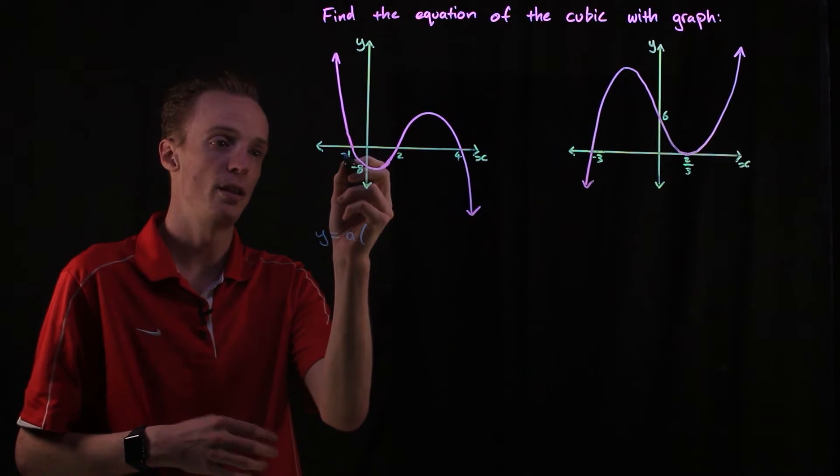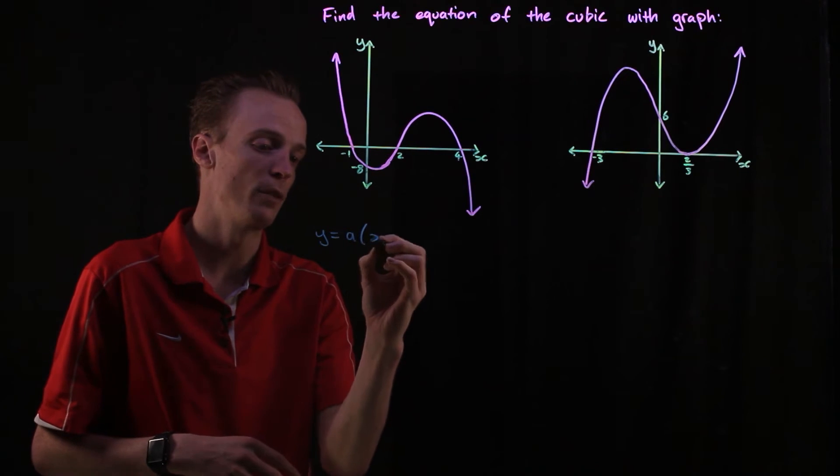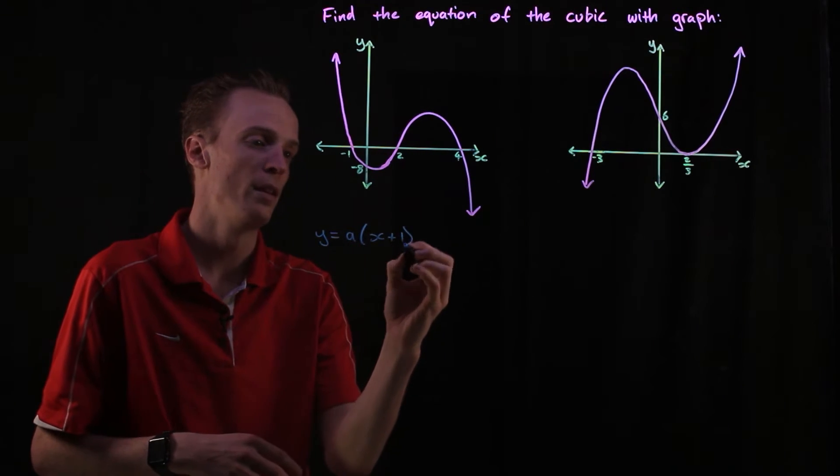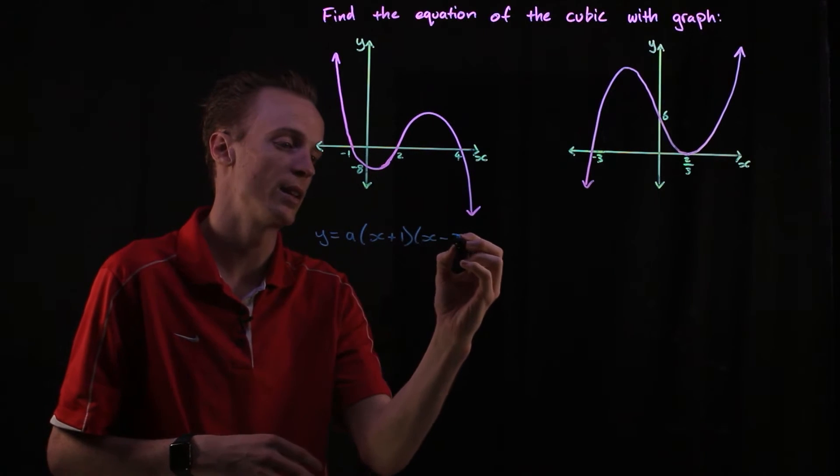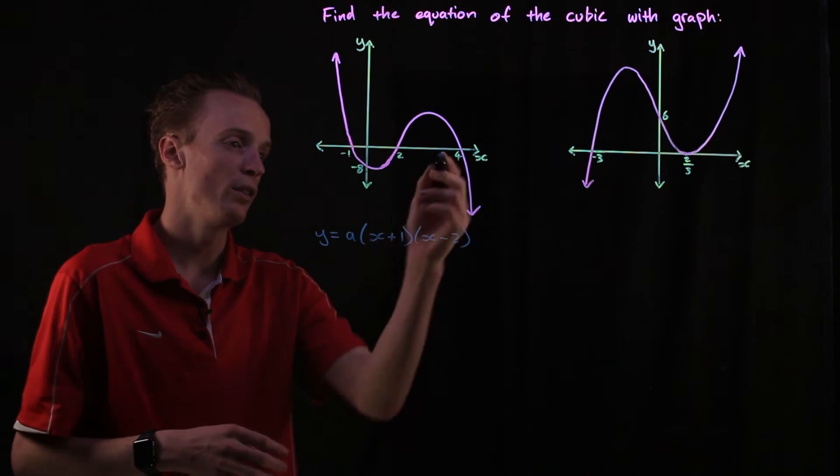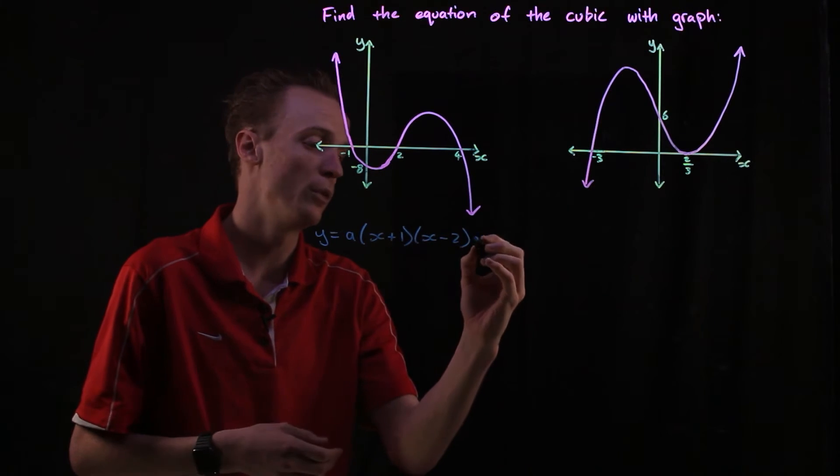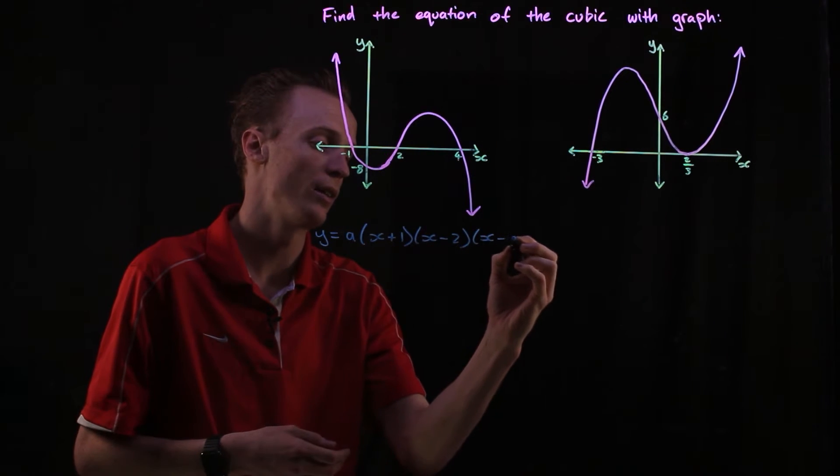The first one is going to be the root of negative one, so the linear factor will be x plus one. The second linear factor is x take two, and the third linear factor is the root of four, which is x take four.